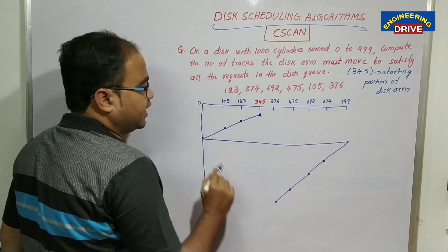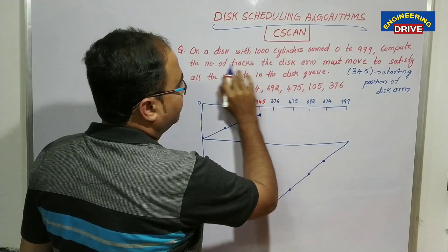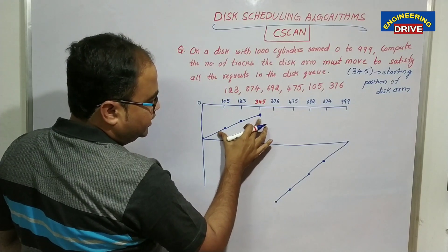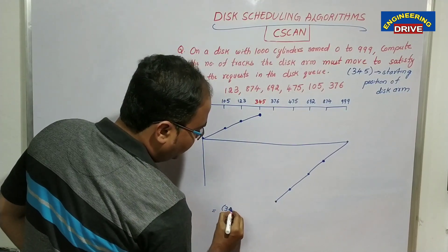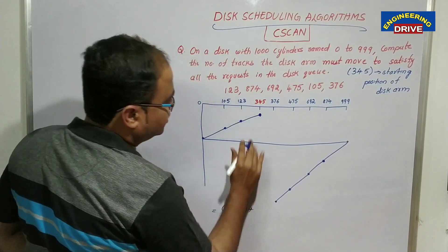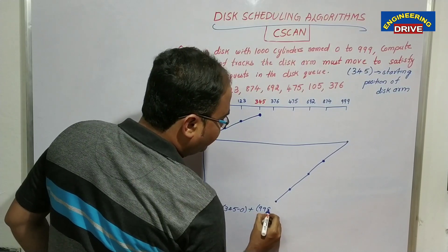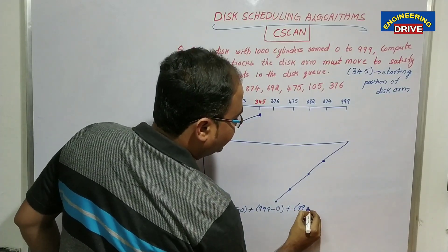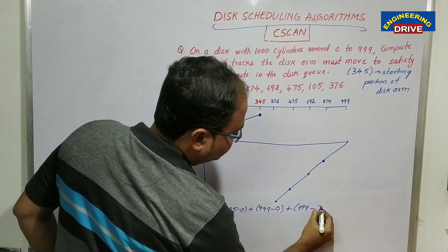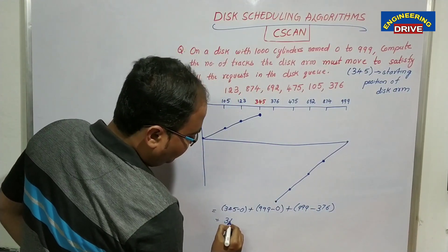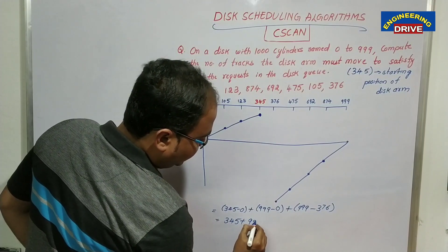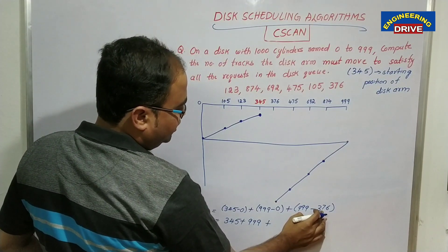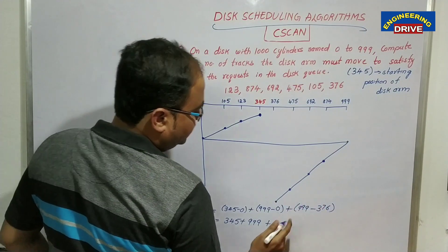The circular scan graph has now been completed. Now finally we need to find out the number of tracks using the same method. The calculation is: 345 minus 0, plus 999 minus 0, plus 999 minus 376 — which gives us 345 plus 999 plus 623.